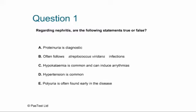Let's look at the answers. A: Proteinuria is diagnostic — this is false. In paediatric nephrology, proteinuria is virtually never diagnostic of any condition. It's a very early, non-specific response to glomerular injury and not diagnostic in any way.